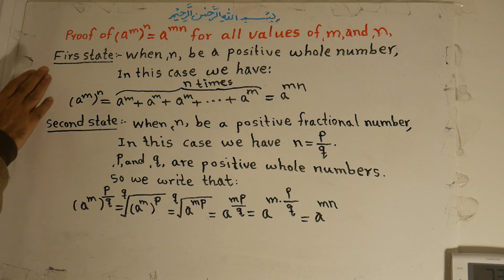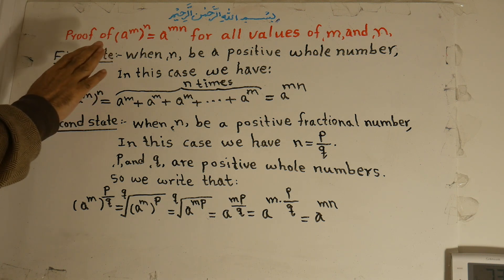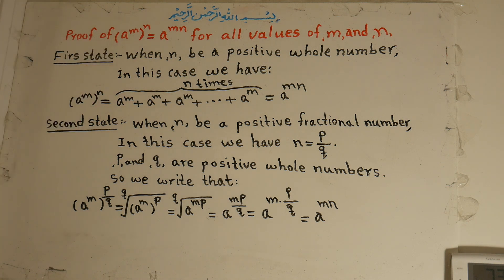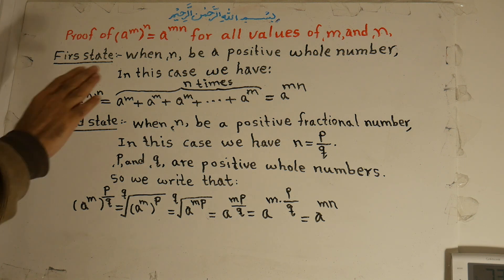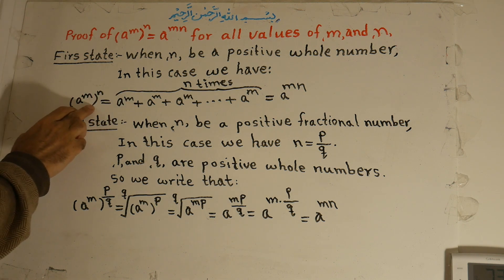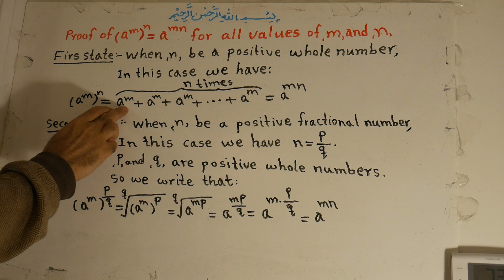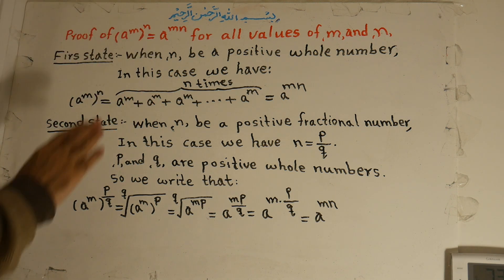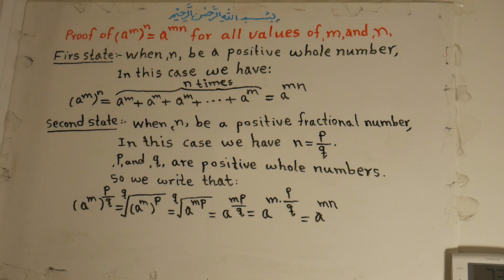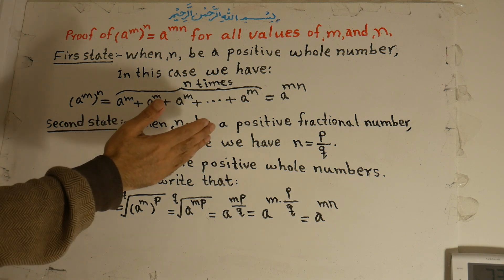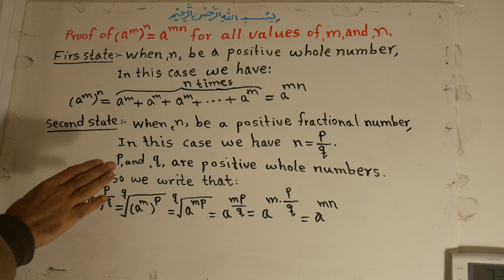To repeat: proof of a to the power of m, all to the power of n, equals a to the power of mn for all values of m and n. First case — when n is a positive whole number: a to the power of m, all to the power of n, equals a to the power of m added n times, which equals a to the power of mn.